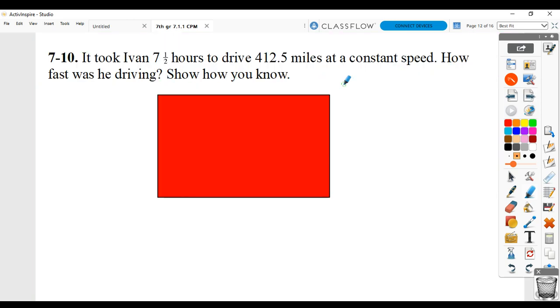7.10 says that it took Ivan 7.5 hours to drive 412.5 miles at a constant speed. How fast was he driving? Show how you know.